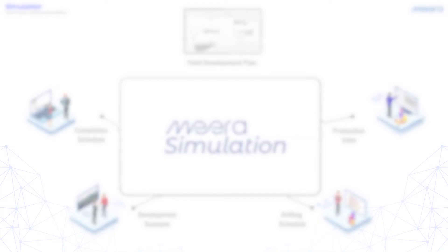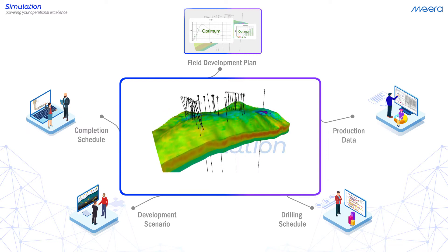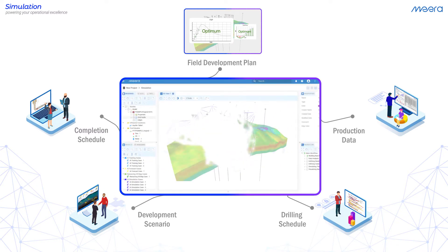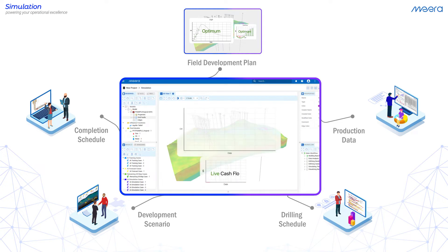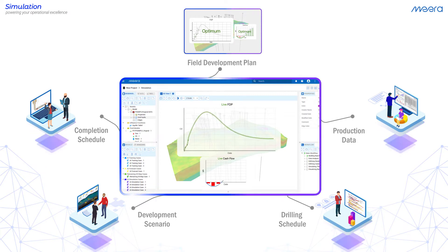Your optimum dynamic reservoir model is coupled into the Mira AI framework. This is done by reassembling the components of your original model so it meshes into the machine learning framework that tightly incorporates the new production data, leading to a super-fast, self-updating, optimum and live dynamic reservoir model.